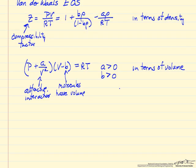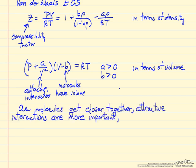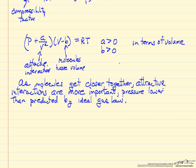And this accounts for attractive interactions between molecules. So as molecules get closer together, so this could be higher pressures, lower temperatures, but as molecules get closer together, the attractive interactions are more important. And the end result is the pressure will be lower than predicted by ideal gas law.